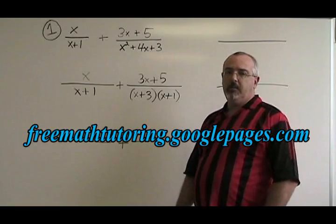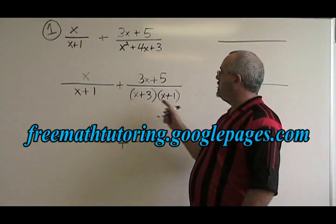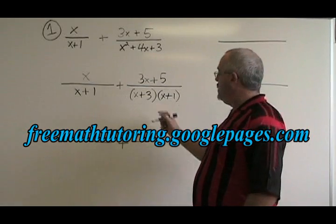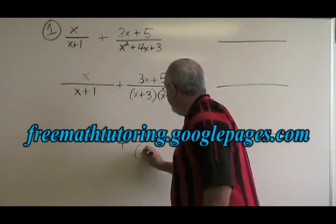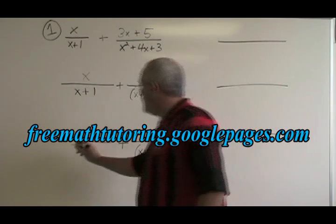Now we have to find the common denominator. The lowest common denominator of x plus 1 and x plus 3, x plus 1 is x plus 3, x plus 1. I'm going to copy it down here in both fractions.